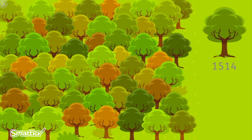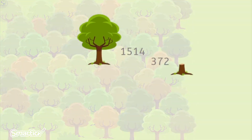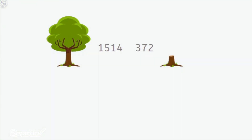She kept looking and saw that in the fall of last year, the association had to cut down 372 diseased trees. There are quite a few years' difference between each date. By subtracting the trees cut down from those that were there three years ago, Zoe can work out an approximate number of trees currently in the forest.